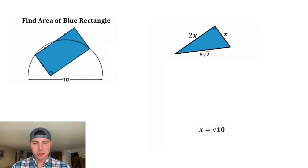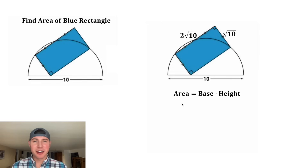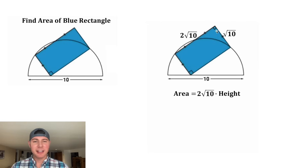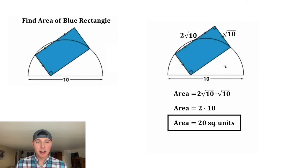Now we know the shorter side of the rectangle: x becomes √10 and 2x becomes 2√10. Now we can find the area of the rectangle — it's equal to base times height, where the base equals 2√10 and the height equals √10. That's equal to 2 × 10 = 20. Let's give it a label of square units and put a box around it. The area of the blue rectangle is 20 square units!